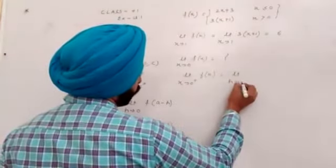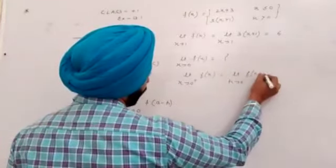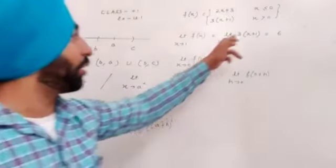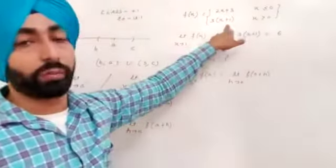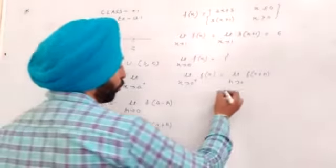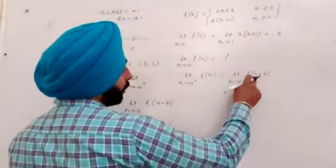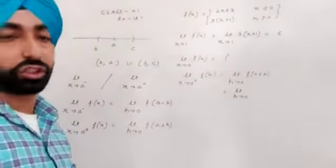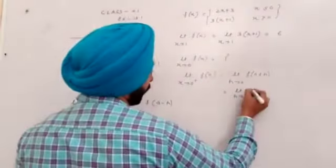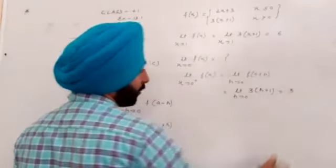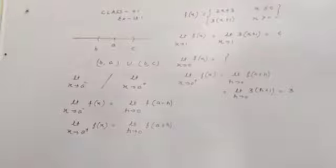limit h approaches to 0, f of (0 plus h). Now I have to pick the right neighborhood from 0. So from 0, function which is 3x plus 1. So I will put limit h approaches to 0. What is f of h? So f of h is 3 times h plus 1. Put h equals 0, the answer is 3. The right limit is 3.